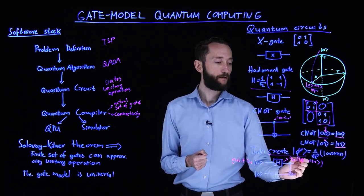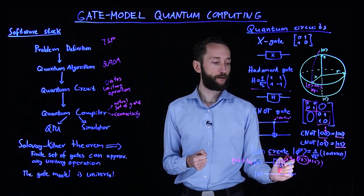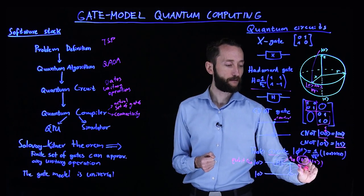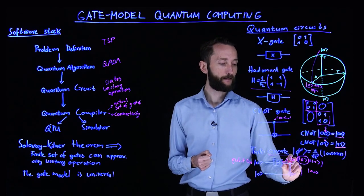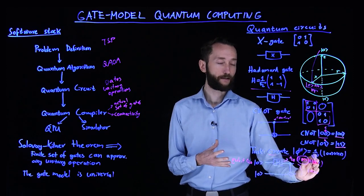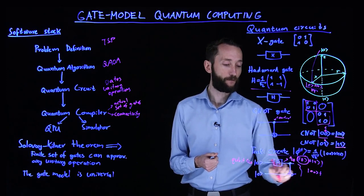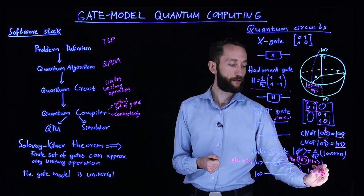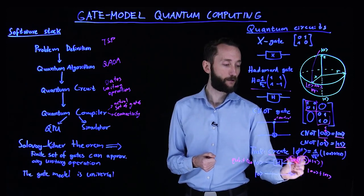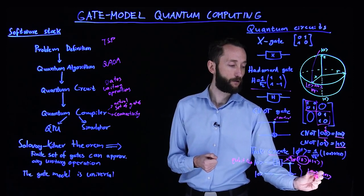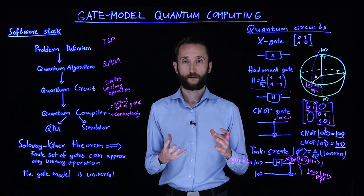And now we apply the control, control not. So when the control not looks at this one, it doesn't do anything. So the final state, we have the zero, zero element. And when it looks at the second part of the superposition, then it says that it's one, which means it flips this qubit. So this is going to be the one, one state. And we have an equal superposition. So this circuit prepares the maximally entangled state with just two qubits.